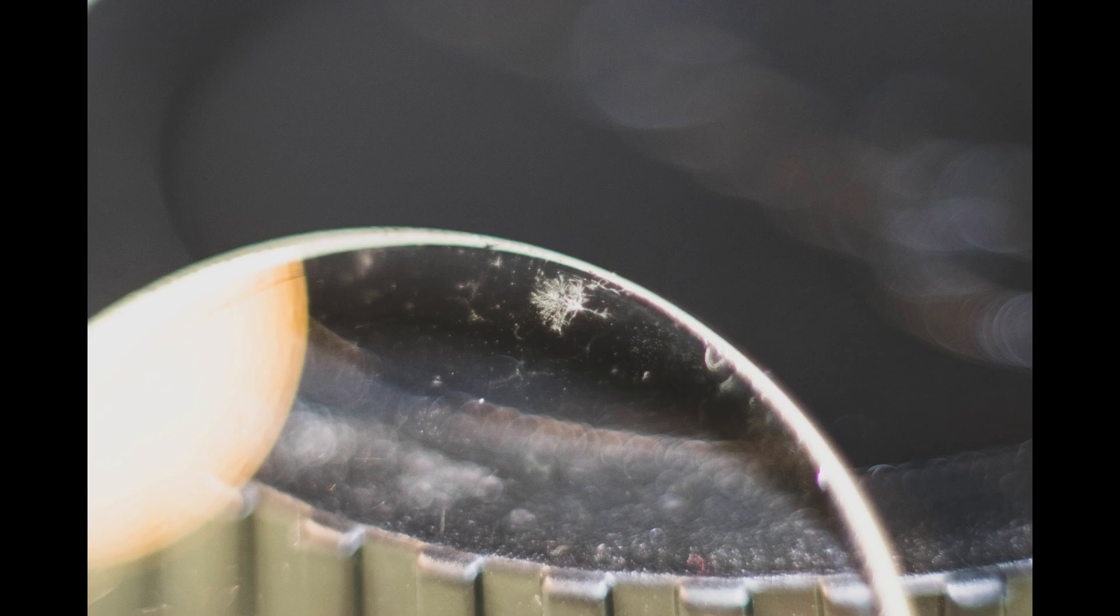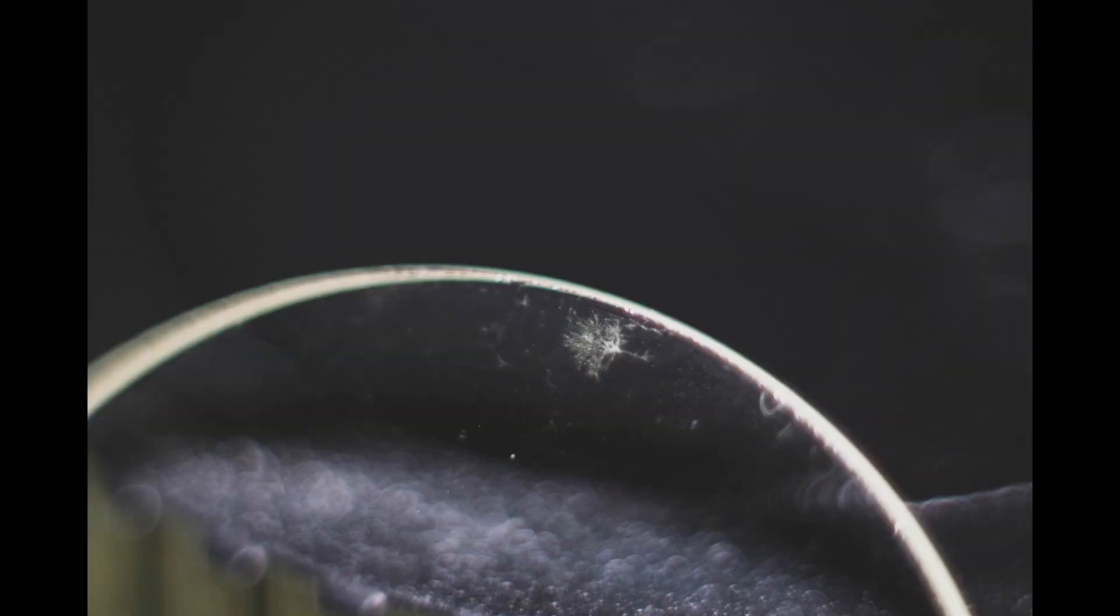This little tree here, that's basically what it looks like. This is just a macro of it. I used a macro lens to take a close-up of it. It's really tiny, it's very hard to see even with the naked eye. This is great magnification.